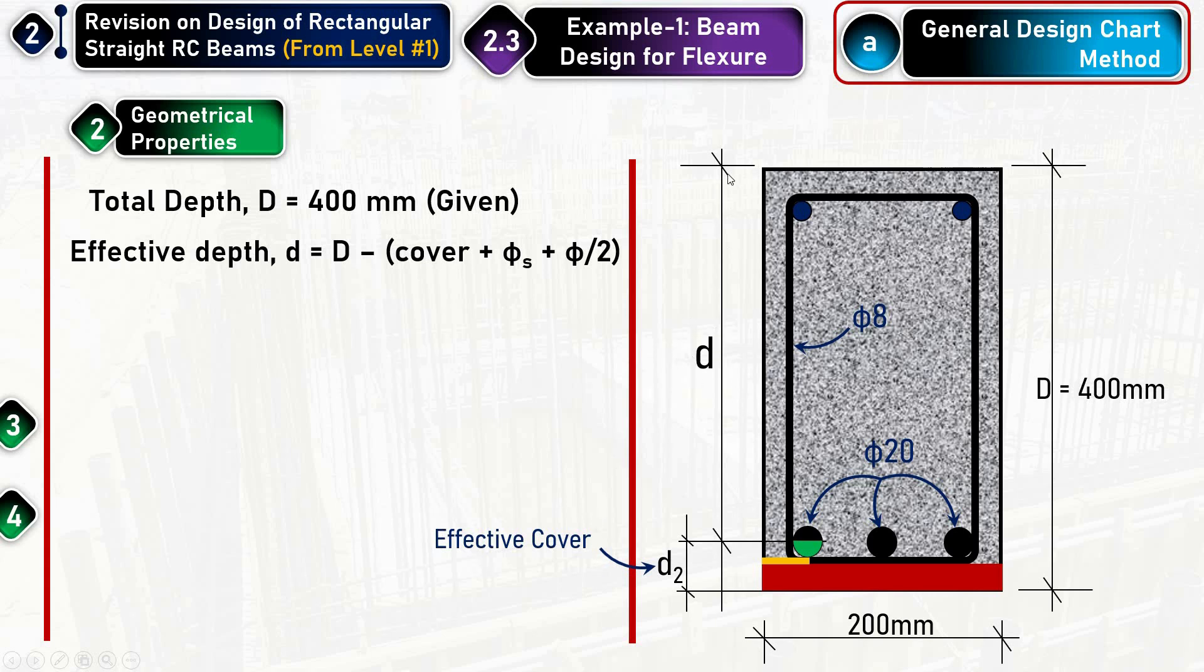So this is the effective depth and this is the effective cover. So the total depth minus the effective cover gives me the effective depth. Now here I can calculate the effective depth: 400, the total depth, minus the concrete cover...